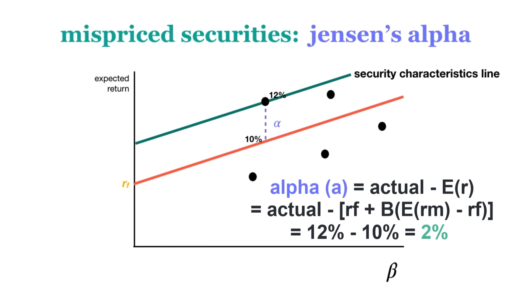When Jensen's Alpha is positive, it means that the security is earning a higher return than what's expected according to the CAPM, therefore it is undervalued. When Jensen's Alpha is negative, it means that the security is earning a lower return than expected, therefore is overvalued.